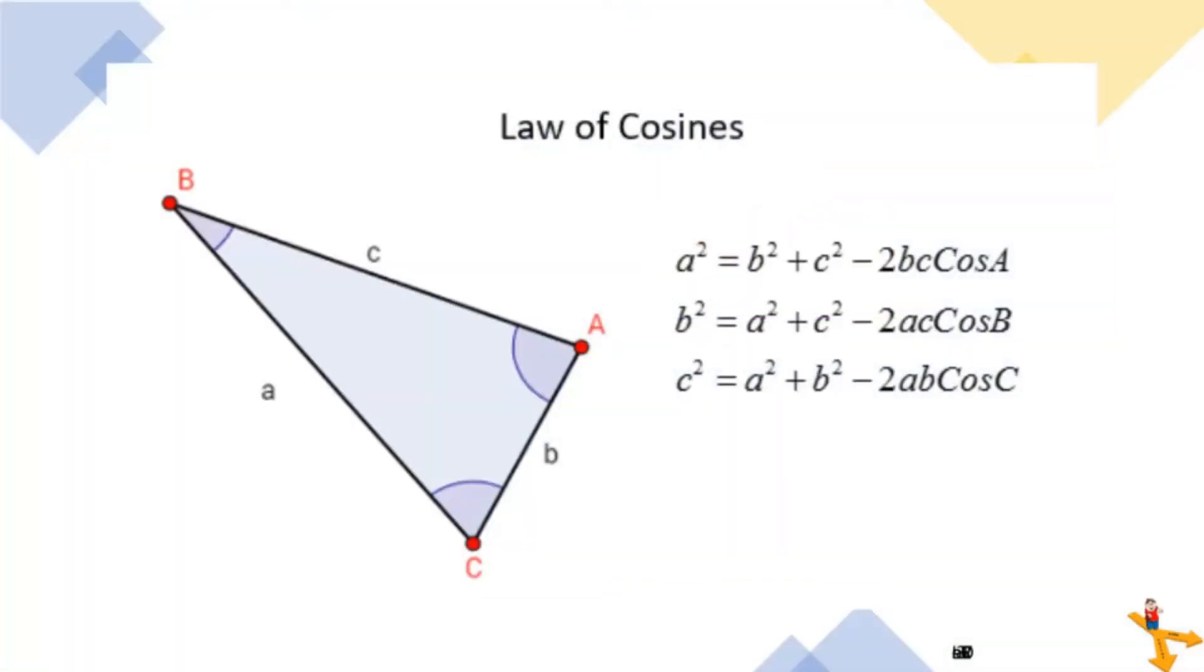For this lesson, it is also important that we recall the law of cosines. The law of cosines is useful for finding either the third side of a triangle when we know two sides and the angle between them, or the angles of a triangle when we know all three sides.